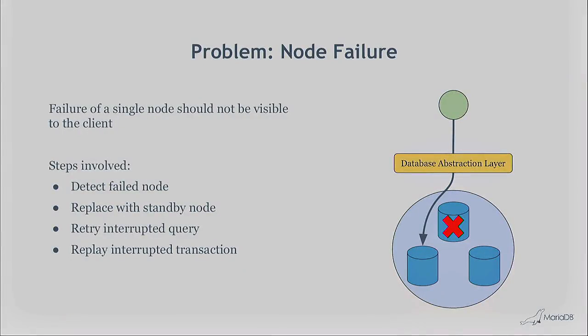On node failure: you need to detect that a node has failed, replace it with a standby node, and if a query was interrupted, the abstraction layer needs to retry it on another node. The most complete way of hiding a node failure is replaying transactions on a separate node — if the server where you were mid-transaction fails, the abstraction layer should handle retrying on a healthy node.